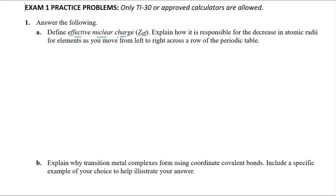Define effective nuclear charge — that's almost a Chem 111 question — and explain how it's responsible for the decrease in atomic radii as you move left to right across a row of the periodic table. Effective nuclear charge is denoted Z_eff, and it's mathematically defined as the nuclear charge Z — the number of protons — minus the shielding.